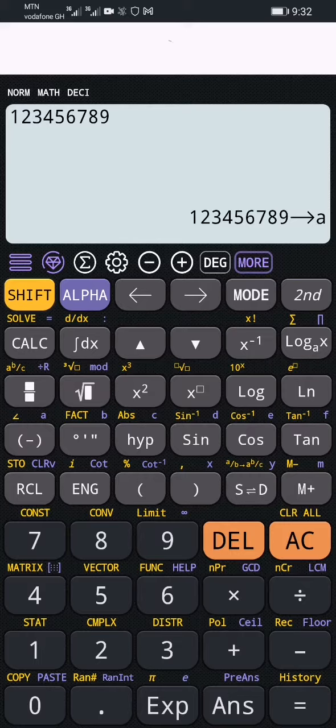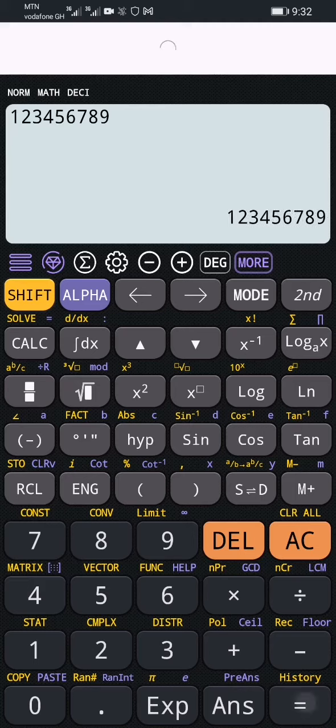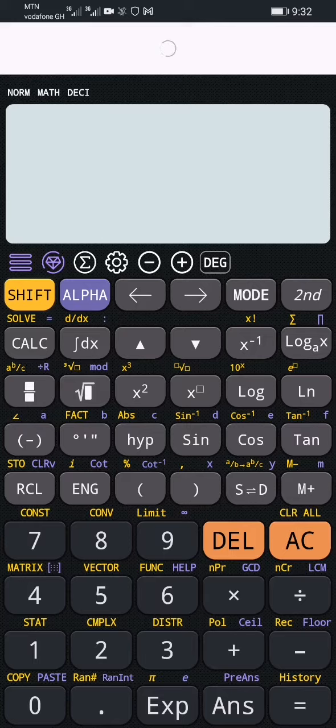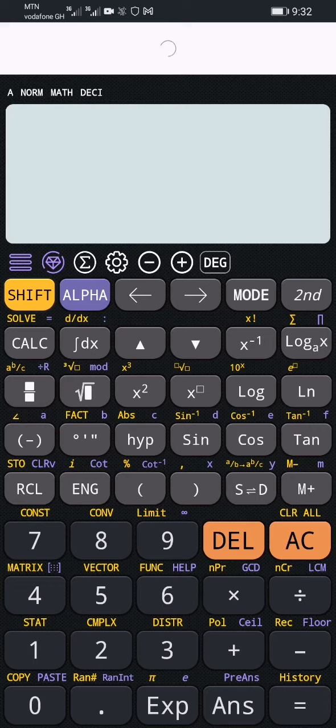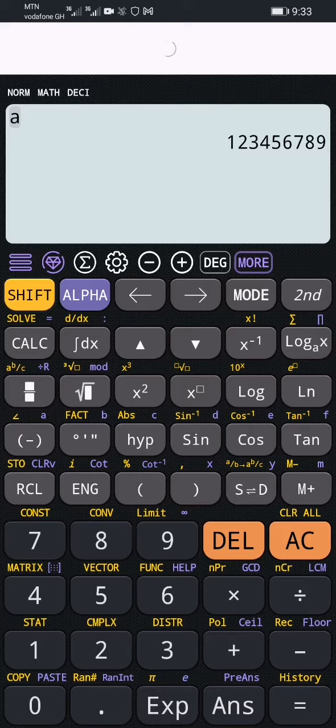You see the arrow? That means that it has stored at 'a', so you can press the equals sign. Let me delete everything here and retrieve it now. To retrieve that, I'll press ALPHA, then 'a', then equals. See? The numbers that are stored at 'a': you have 123456789.